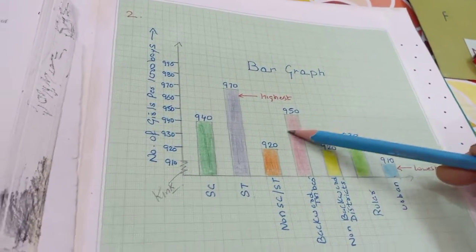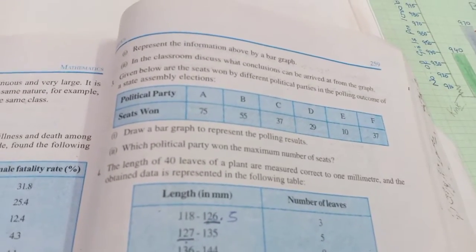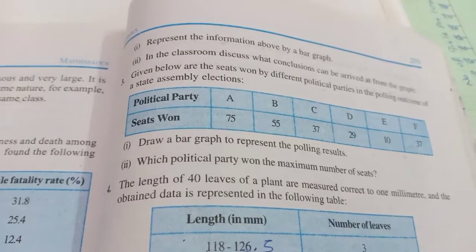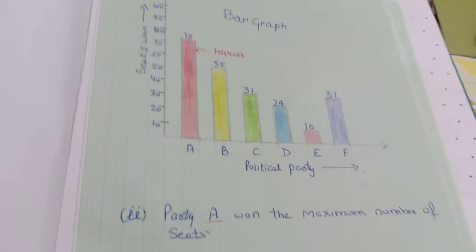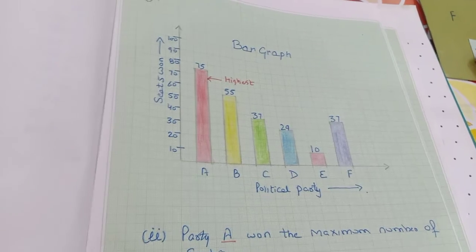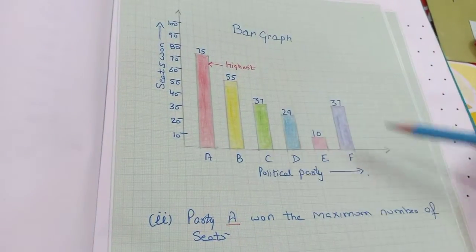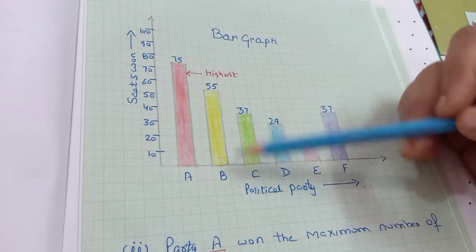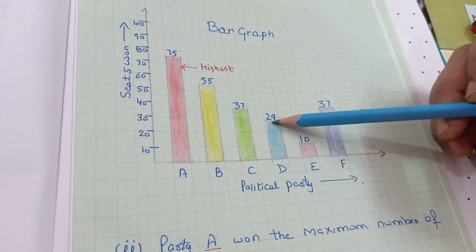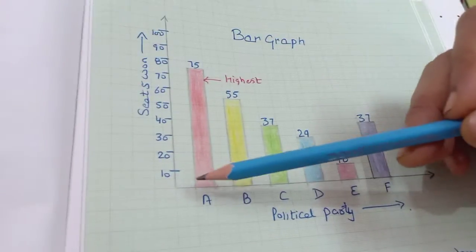This is the graph for the second question of our NCERT. Now we are moving to the third sum. Third sum में भी bar graph बनाना है। Political parties given हैं और seats given हैं कि वो कितनी seats जीत रही हैं। हमें answer बताना है which political party won the maximum number of seats. हमने x-axis बनाया, y-axis बनाया — एक block बनाएंगे, एक छोड़ेंगे। Party A is 75, party B is 55, then 37, 29, 10, 37 — यहाँ मैंने 10-10 की marking की है।